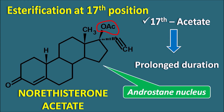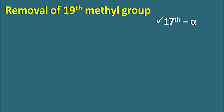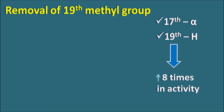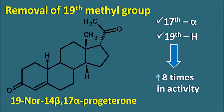Now let us see structural modifications to the pregnane nucleus. Removal of the 19th methyl group from the pregnane nucleus, combined with 17-alpha configuration and 14-beta configuration — converting the normally alpha 14-hydrogen to beta — results in a drug that is eight times more active than progesterone. This compound is 19-nor-14-beta-17-alpha-progesterone: at the 17th position alpha configuration, at the 19th position hydrogen instead of methyl, and at the 14th position beta configuration.